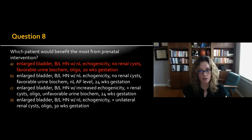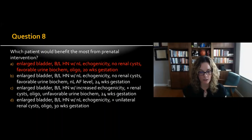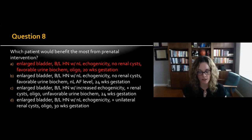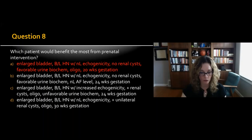The majority correctly answered A. Answer A describes a fetus with an enlarged bladder, bilateral hydro-ureter-nephrosis with normal echogenicity, no renal cysts, favorable urinary analytes, and oligohydramnios at 20 weeks gestation. This is the patient that would benefit the most — classified as Stage 2 using the Ruano classification system. They have the most to gain with intervention to reduce mortality and early-onset ESRD. Intervention will allow amniotic fluid levels to increase, improving pulmonary development, and may help prevent severe renal impairment.